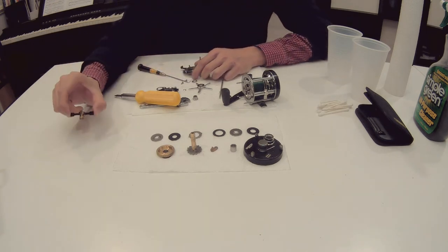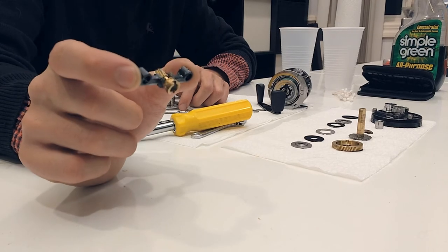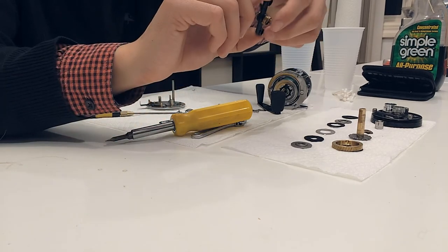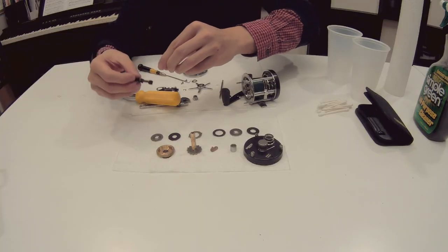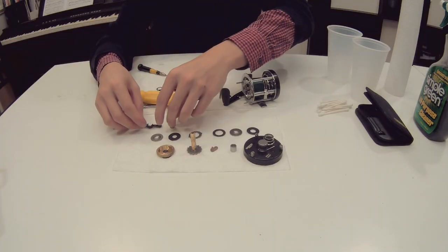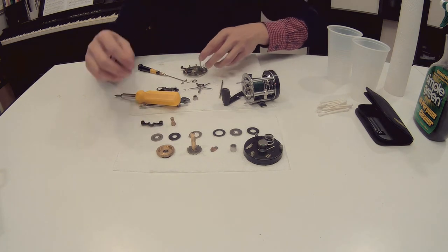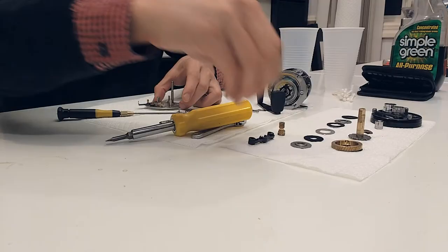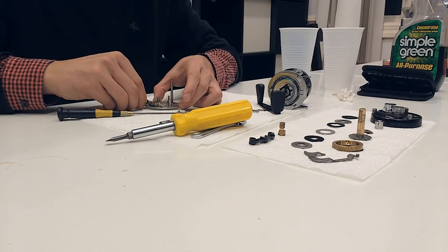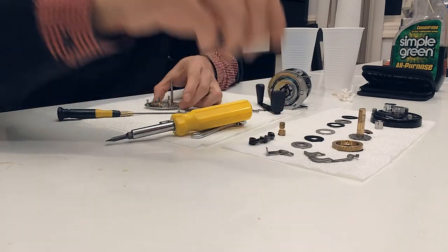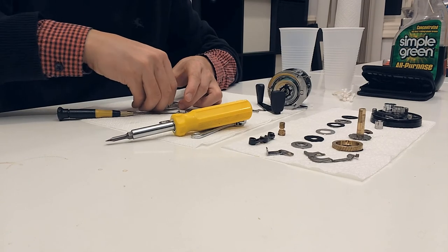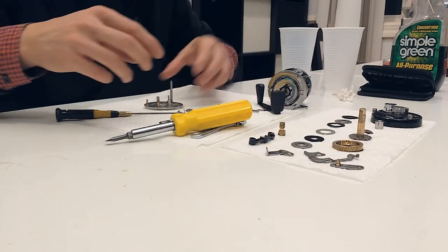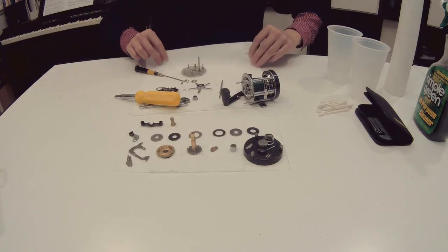Then you lift this part, the plastic holder. It holds the pinion gear. And you can just take the pinion gear, separate these two. Then the clutch arm, spool tension release button, and the arm link.